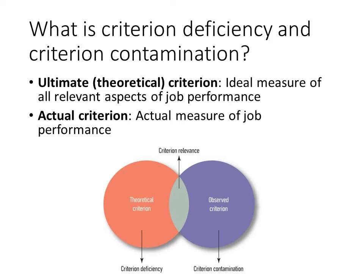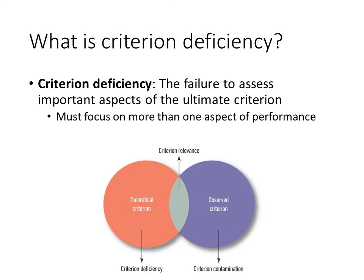But that doesn't stop us from trying. An IO psychologist's job is to come as close to that ultimate criterion as possible. The actual measure that the IO psychologist creates is called the actual criterion, or the observed criterion. The ultimate criterion is the goal, which we will never reach. The actual criterion is what we create for our purposes. When our measure — the actual criterion — fails to completely capture the ultimate criterion, the measure is deficient; it's missing important components.